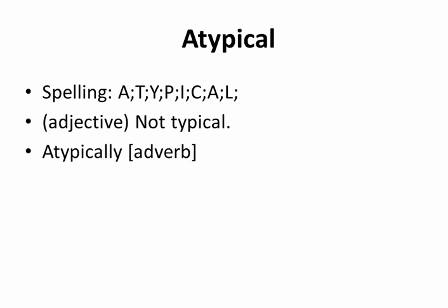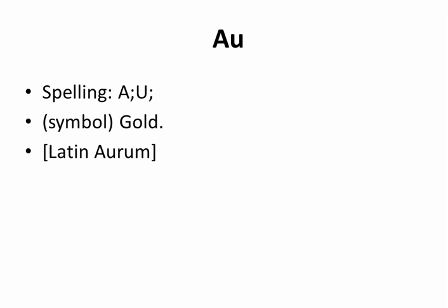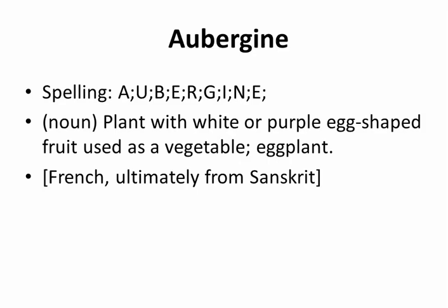AU. Spelling: A-U. Symbol. Gold. From Latin 'aurum.'